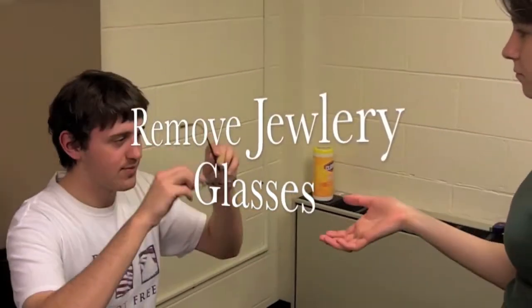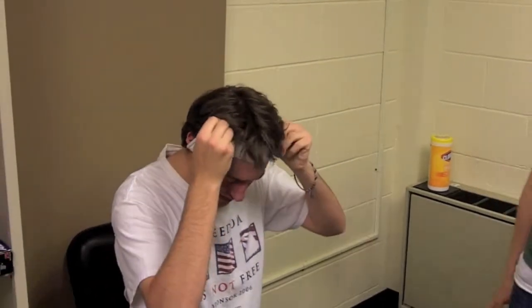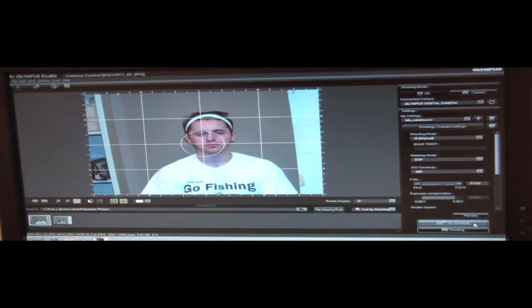Instruct the participant to remove all earrings and facial jewelry. Place a headband on the participants who have hair which lies on their face. We will need to see the participant's entire face, hairline, and ears. This procedure applies to both men and women. Instruct the participant to sit in the chair provided with an upright posture and look into the camera with a neutral face expression. Count down backwards from 3 and press the AF shooting button at the count of 2 to take the picture. This is done to compensate for the delay between when you press the button and when the picture is taken. If the participant's expression is not neutral or you cannot entirely see their face, hairline, or ears, retake the picture.